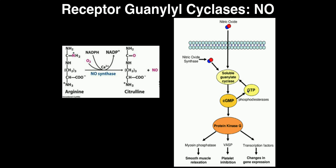If smooth muscle cells are contracted, the vasculature is constricted; if they're relaxed, it dilates. Typically you want a good degree of dilation for health — too much constriction causes hypertension. Nitric oxide crosses the membrane and activates the soluble guanylate cyclase. Endothelial cells can make nitric oxide and send it into the smooth muscle cell, where soluble guanylate cyclase converts GTP into cyclic GMP.